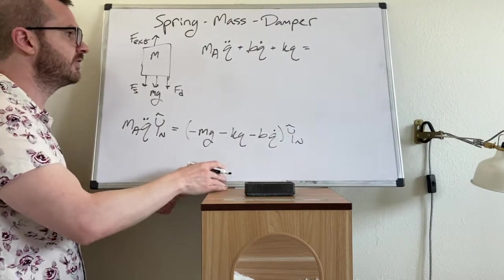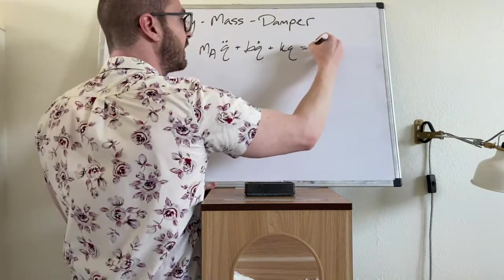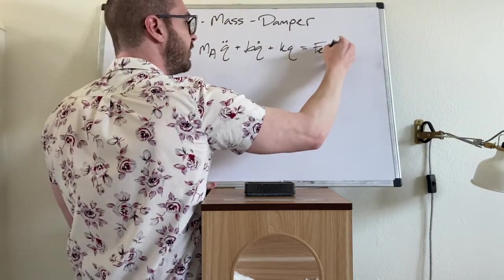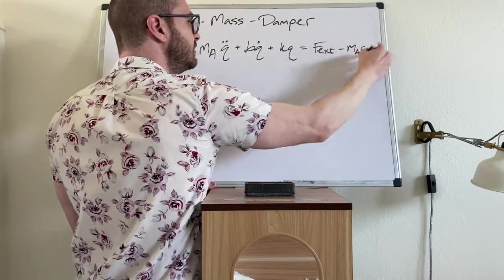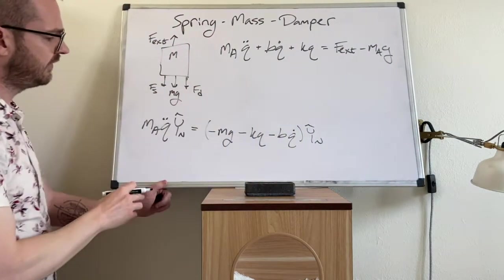So we could directly bring this in and we could say F external minus M A G. Now, notice I've dropped the Y hat N notation.